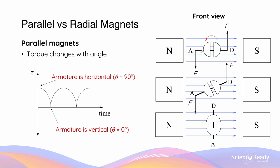However, even though the direction of the torque and rotation remains the same, the magnitude of torque actually changes with rotation. This is because torque is given by NIAB sine theta, where the angle theta is the angle between the force that's producing the torque and the plane of the armature, or the lever arm of the rotation.